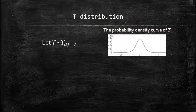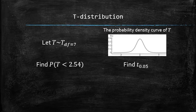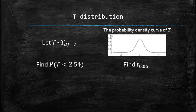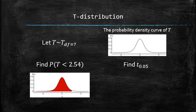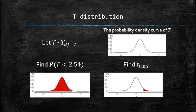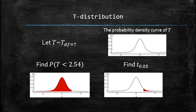Now we want to be able to find the probability such as this one and find the t-alpha such as this one. Let's make sure we understand the questions well. To find the probability that t is less than 2.54 means to find the area under the t-curve to the left of 2.54, and to find t_0.05 means to find the value to the right of which the area is equal to 0.05.